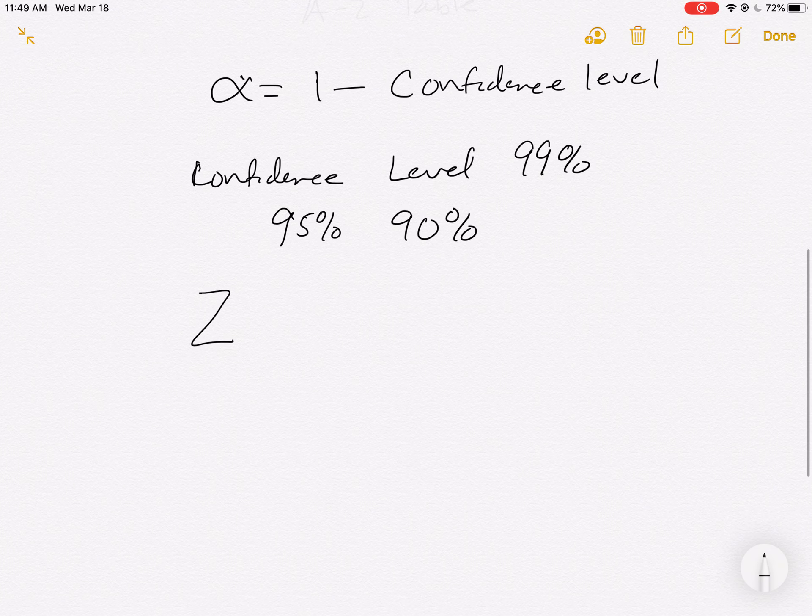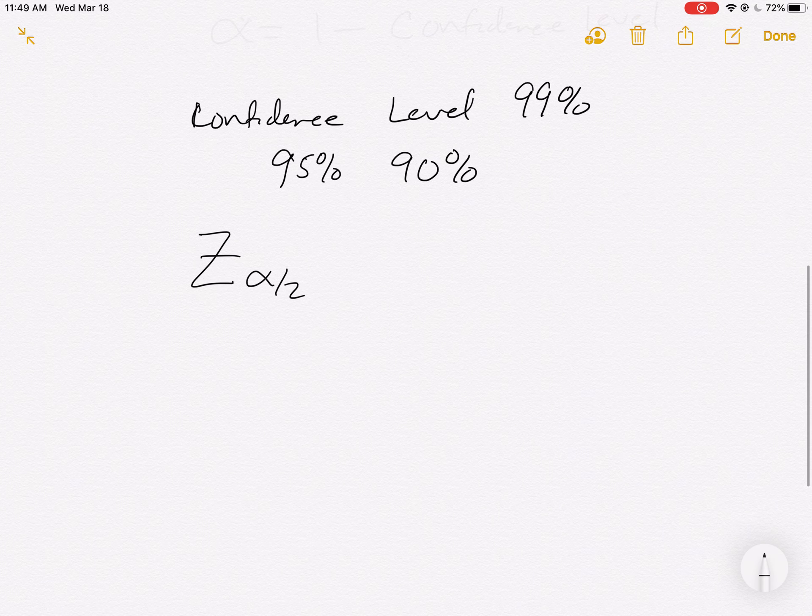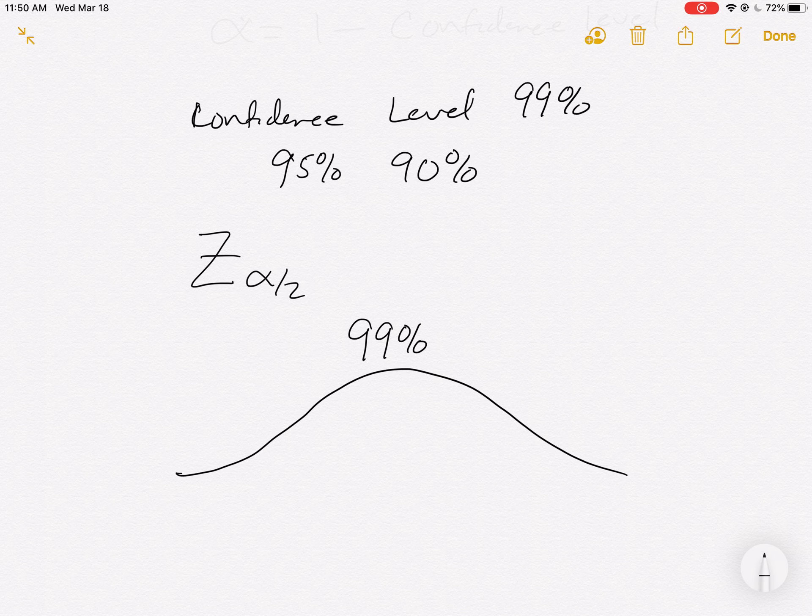When we're asked to find z alpha over 2, let's suppose our confidence level is 99%. If our confidence level is 99%, and we'll know that because in the question it will say find the 99% confidence interval. If it's 99%, then what's happening is we're sandwiching in 99% of the data right in the middle. And what z alpha over 2 is, it's this z value right here that's the upper cutoff.